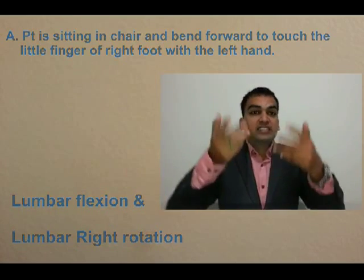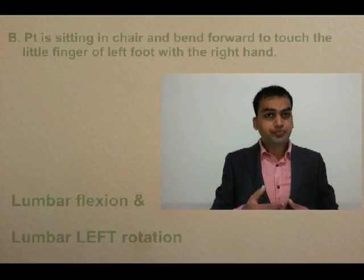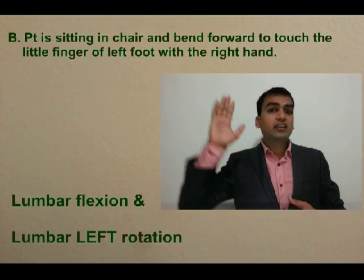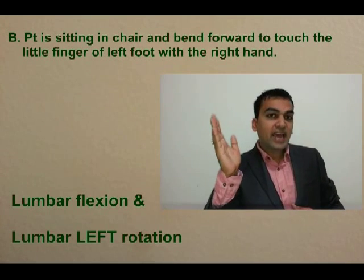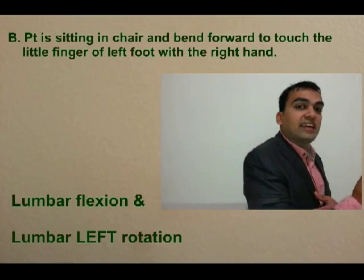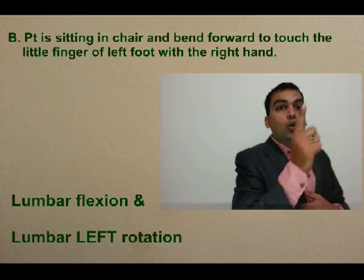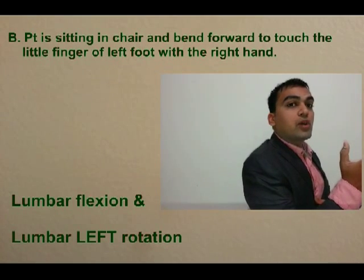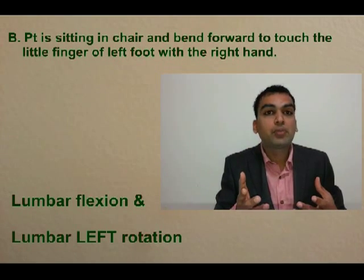The second activity is similar, but this time the right hand is going towards the left leg toe. So this involves left rotation of the lumbar vertebra combined with flexion of the lumbar vertebra.